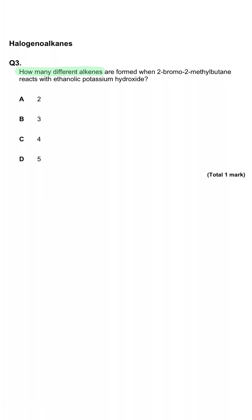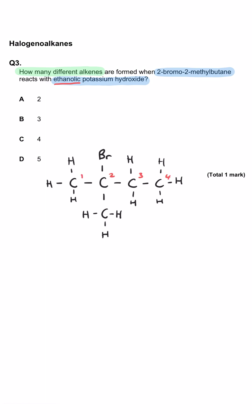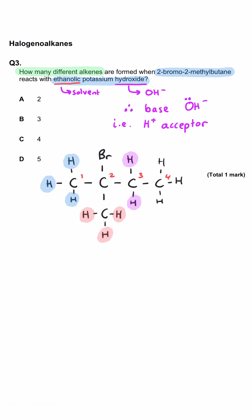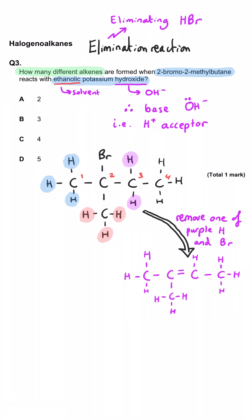How many different alkenes are formed when 2-bromo-2-methylbutane reacts with ethanolic potassium hydroxide? Under these conditions the hydroxide ion acts as a base and removes a hydrogen from a carbon adjacent to the halogen-containing carbon in an elimination reaction. Removing a hydrogen from the right-hand side along with the bromine gives 2-methylbut-2-ene.